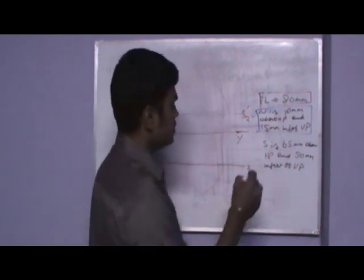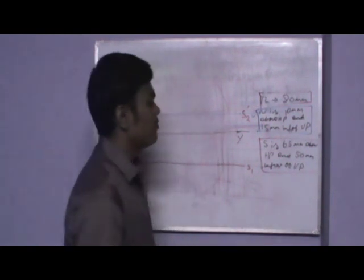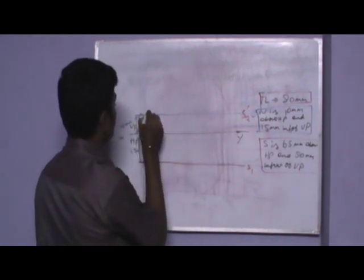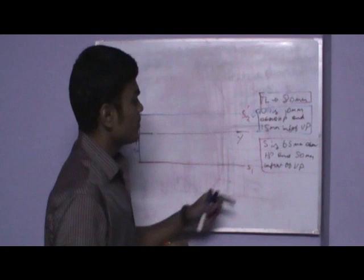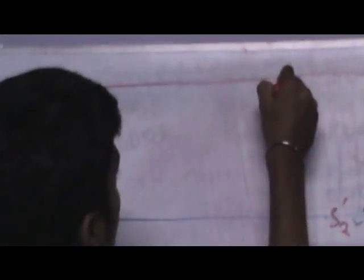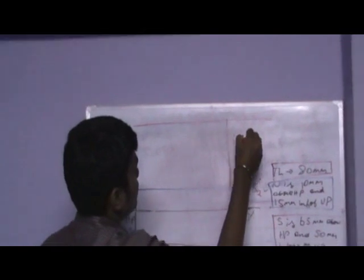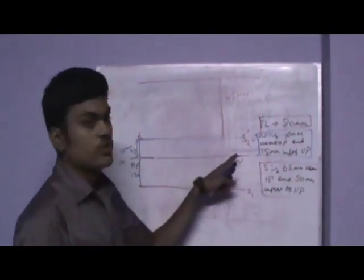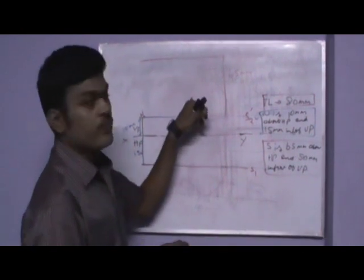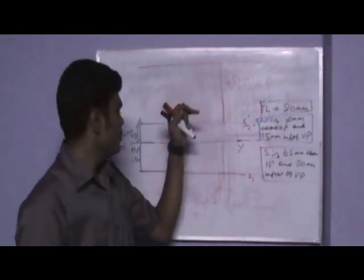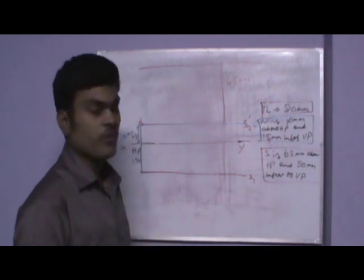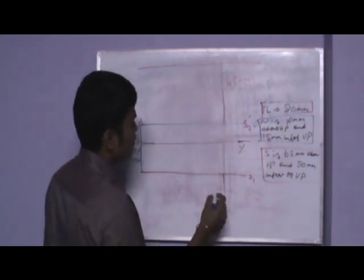Now the other end S is 65mm above HP. The other point S is the other end of the line. I am taking N as the starting point. The other end S is 65mm above HP — I am going to draw a locus of 65mm length. I have drawn 65mm. This is the front view, which lies on VP, and this is the top view, which lies on HP. What is given is 50mm in front of VP, so I am going to take 50mm here.